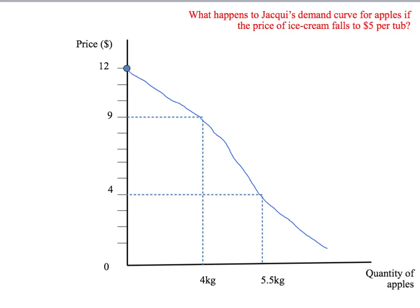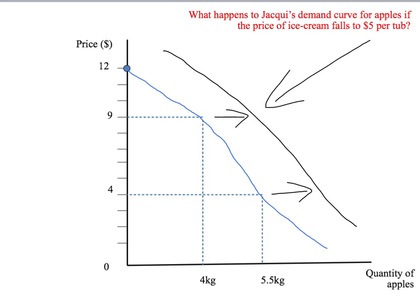What if the price of ice cream falls to $5 per tub from $10? Since ice cream and apples are complements for Jackie, a fall in the price of ice cream means more apple pie and ice cream — she'll want to buy more apples. Her demand curve shifts to the right. At $9 per kilo she'll want more than 4 kilos, and at $4 per kilo she'll want more than 5.5 kilograms. The black demand curve is Jackie's demand when ice cream is $5 per tub.